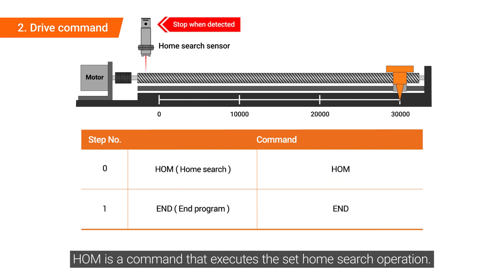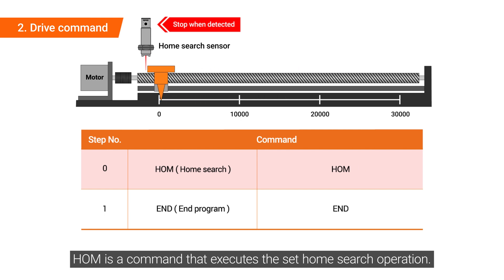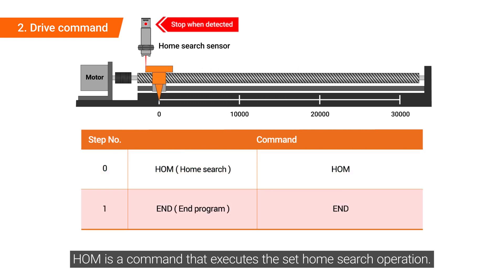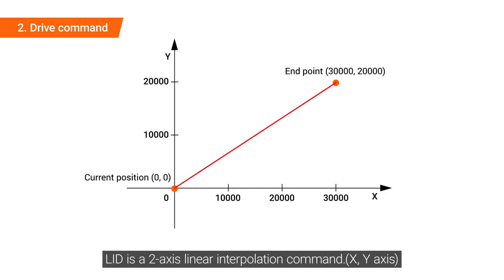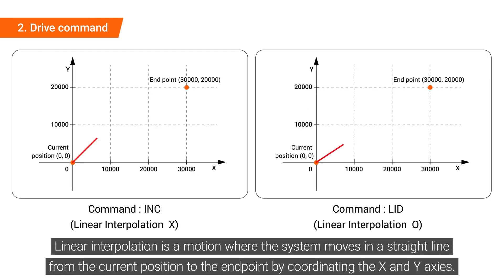HOM is a command that executes the set home search operation. LID is a two-axis linear interpolation command. Linear interpolation is a motion where the system moves in a straight line from the current position to the endpoint by coordinating the X and Y axes.